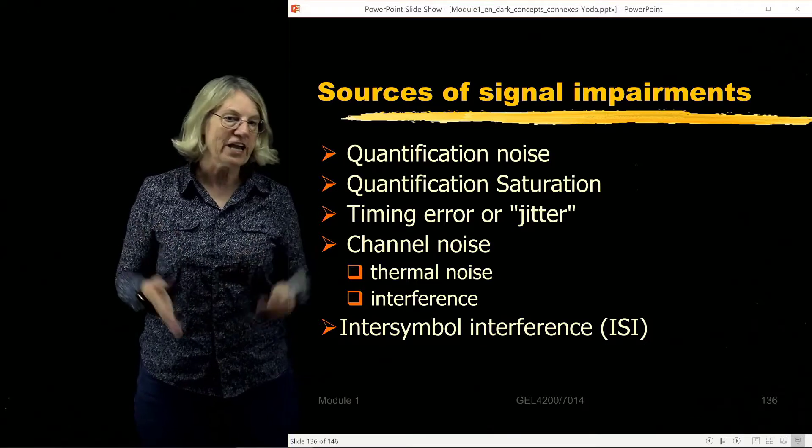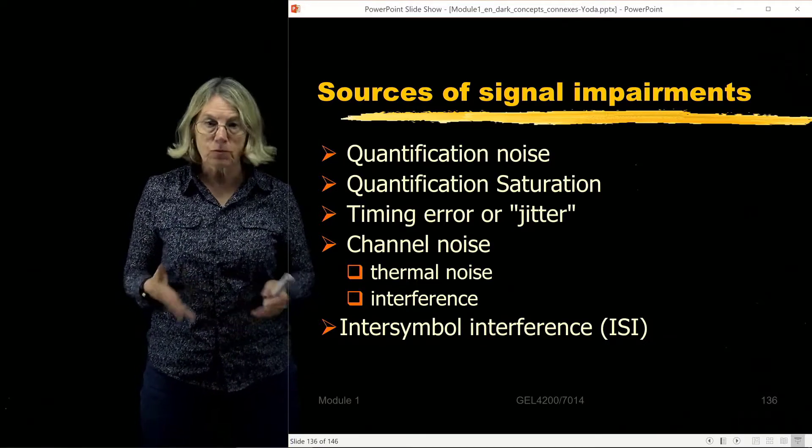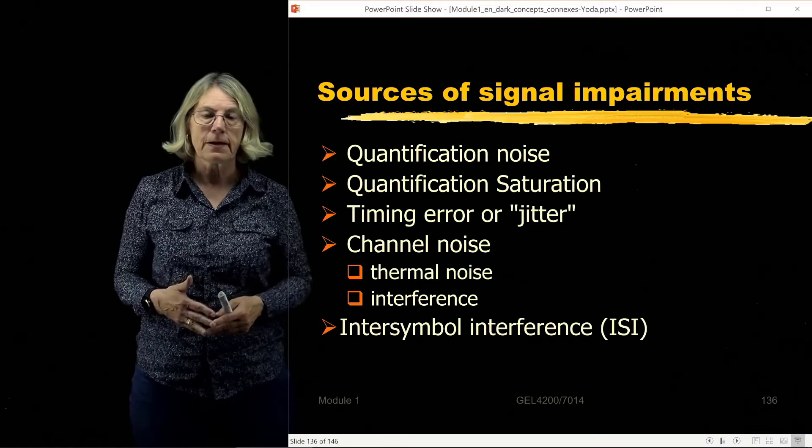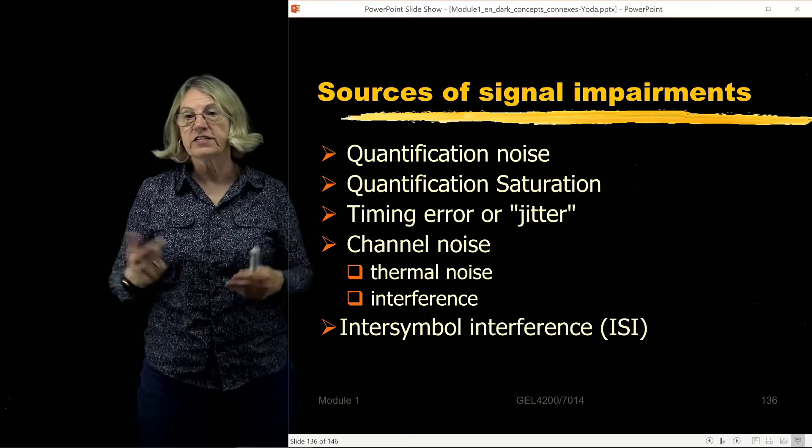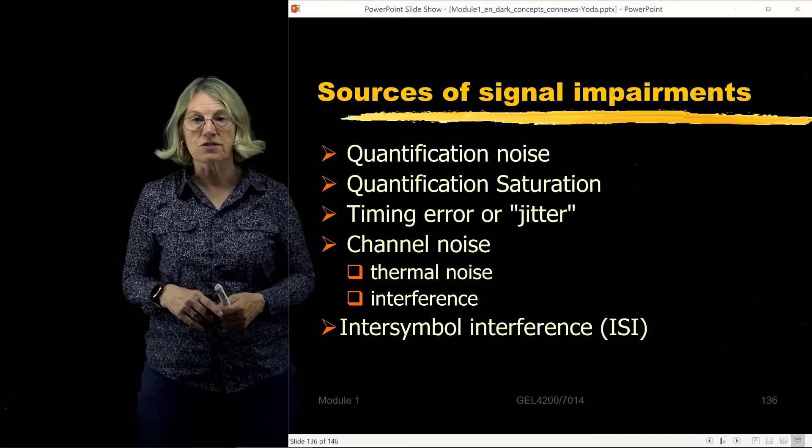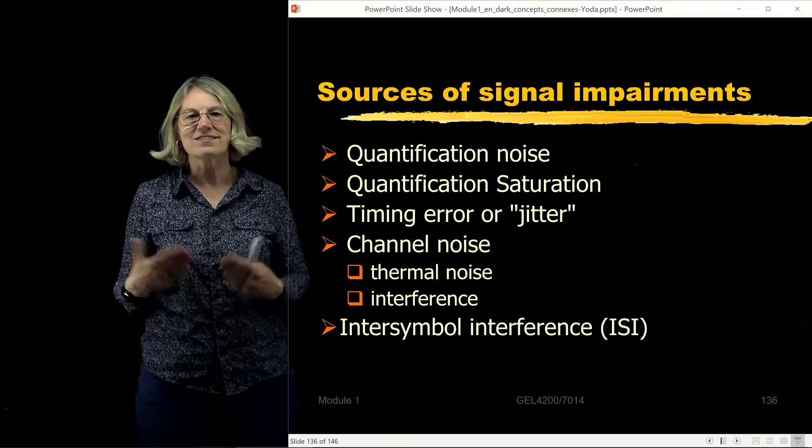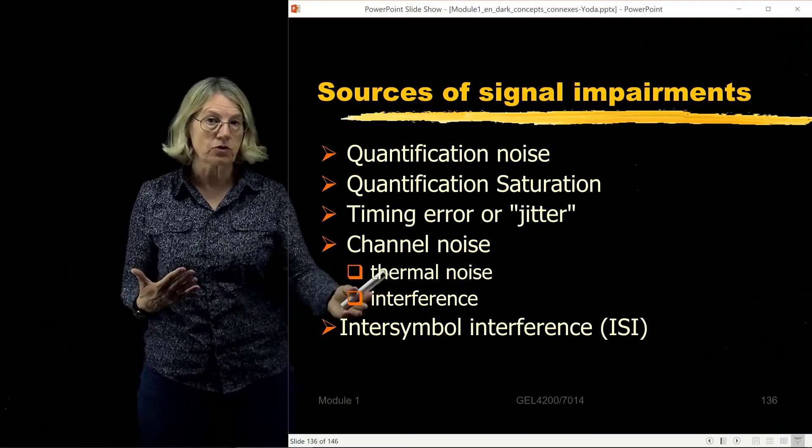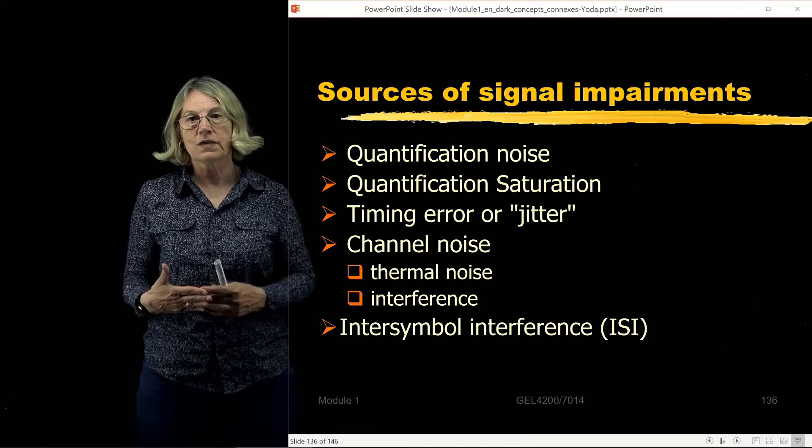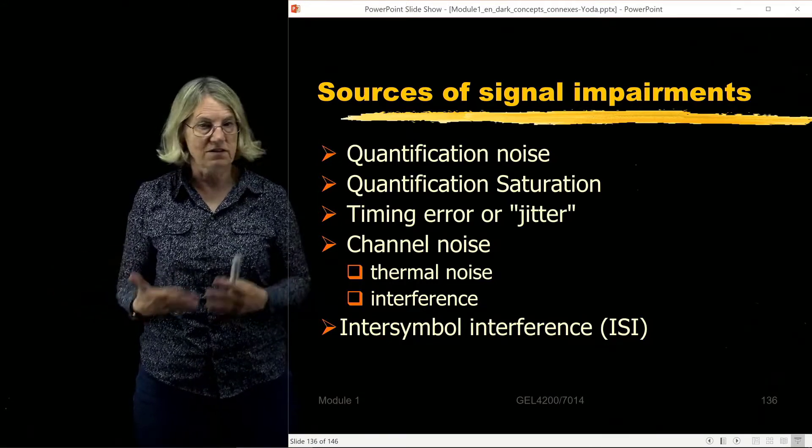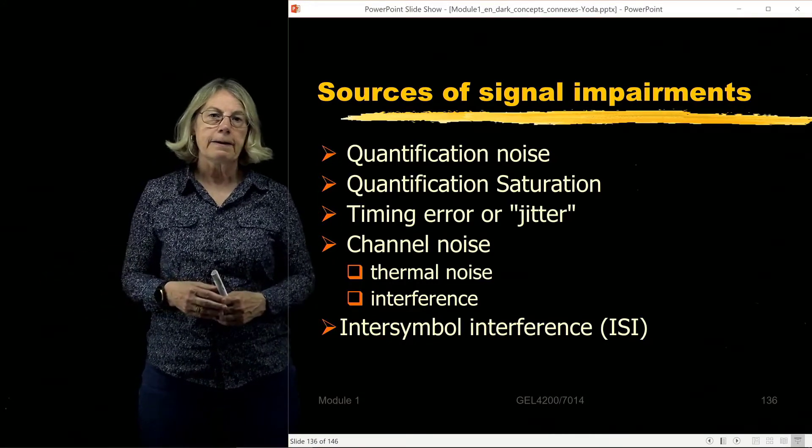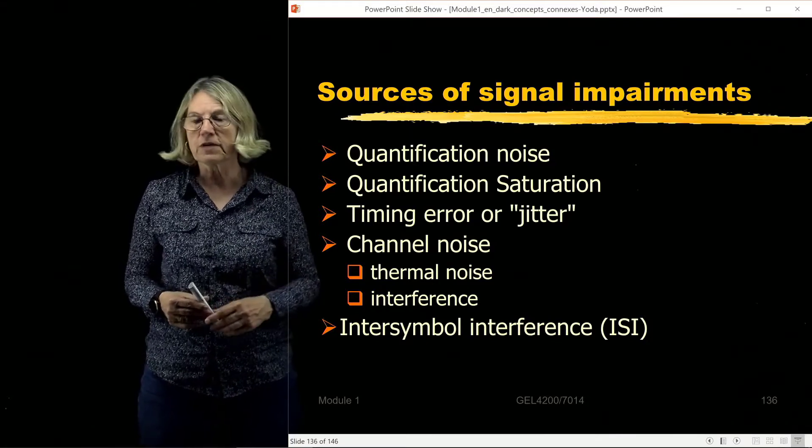There's different kinds of what we call channel noises. There is thermal noise and there's interference. Thermal noise is related to the electronics that we use in circuits. Any electronic circuit always has heat-induced thermal noise that comes from the electrons in the detection process. But in addition to that, we also have something called interference.